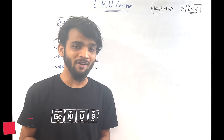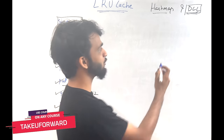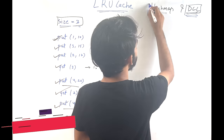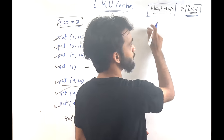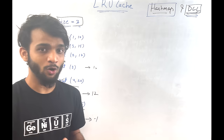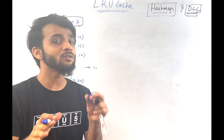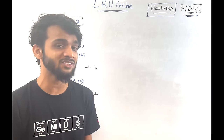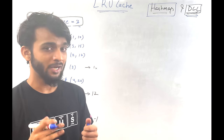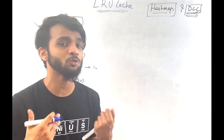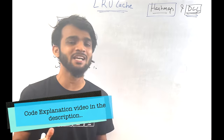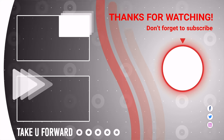That covers every operation of the LRU cache using a doubly linked list and a hash map. Once we walk through the C++ and Java code, it will become much clearer.